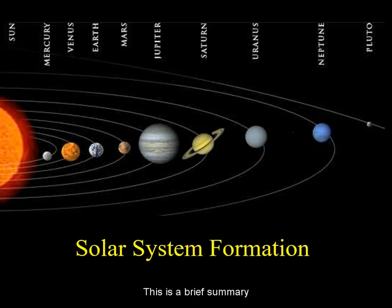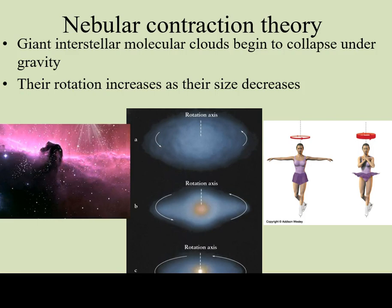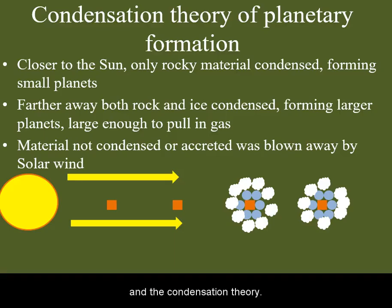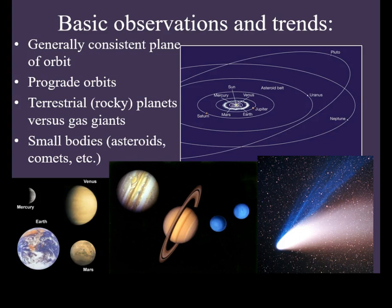This is a brief summary of Solar System Formation involving the Nebular Contraction Theory and the Condensation Theory. Recall that we need to explain the observed properties of planets and their orbits as they are today.